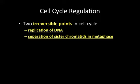In cell cycle regulation, there are two irreversible points. Once the cell has passed these checkpoints, mitosis is going to happen and we cannot go back. The first is replication of DNA — after you replicate your DNA, you can't simply stop the process because you'd have twice as much DNA as necessary. The second is separation of the sister chromatids; once they pull apart, the process must continue until we have two new cells.